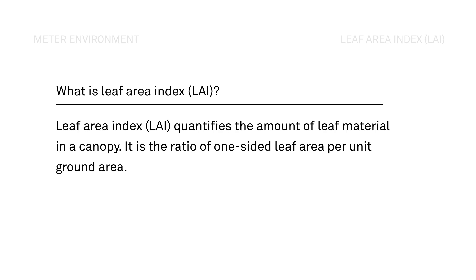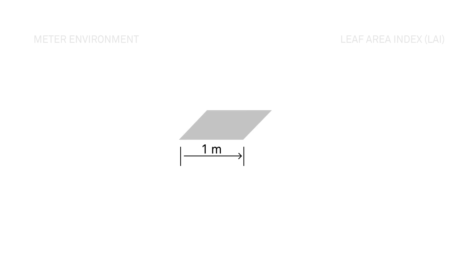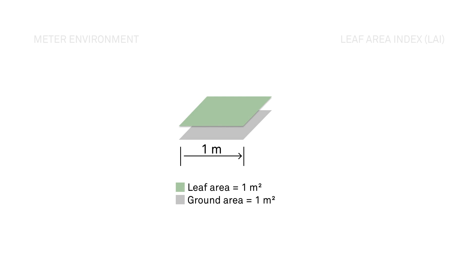But what does that mean? Imagine you have a plot in your field that is one meter by one meter. If that square meter of ground area were to be exactly covered by a single layer of leaves, the LAI for your plot would be 1 to 1, or 1 meter squared per meter squared.